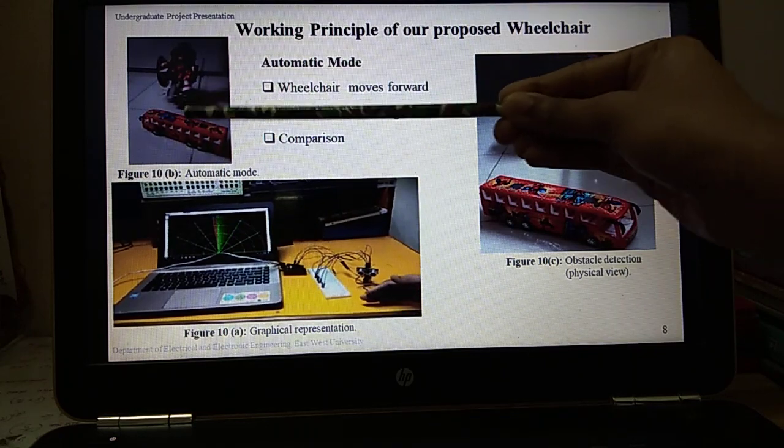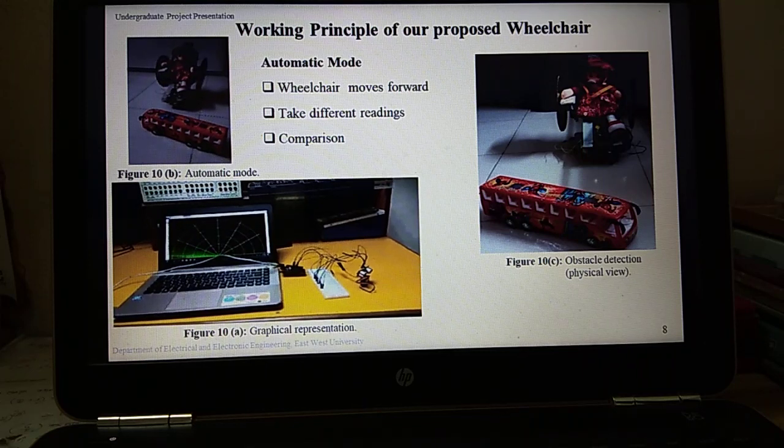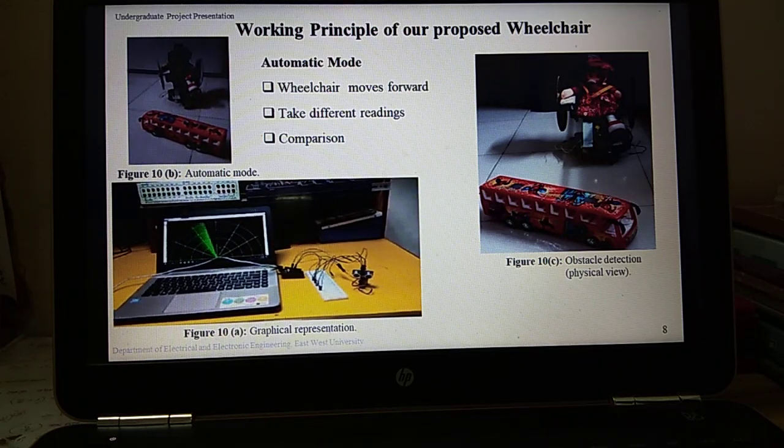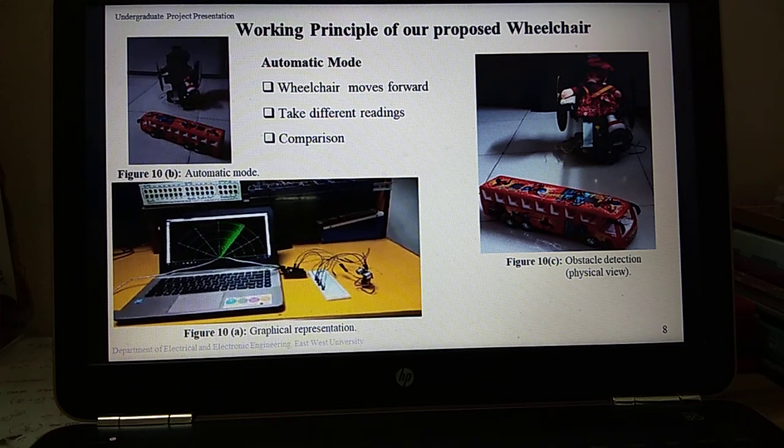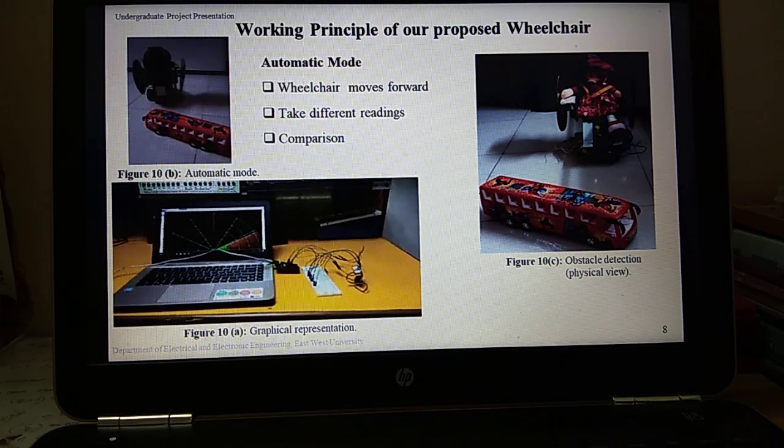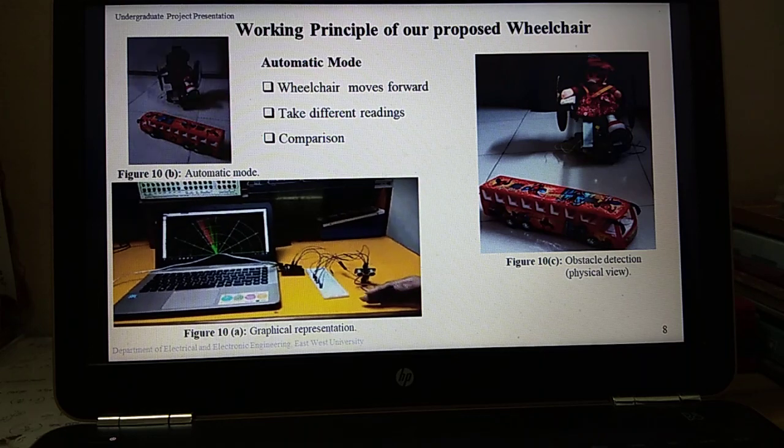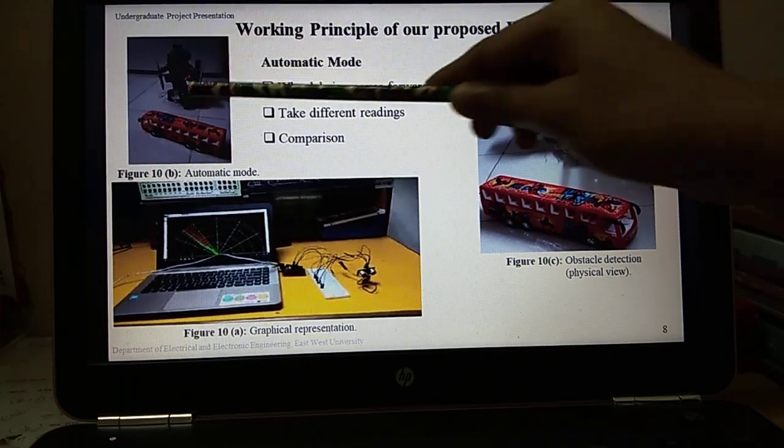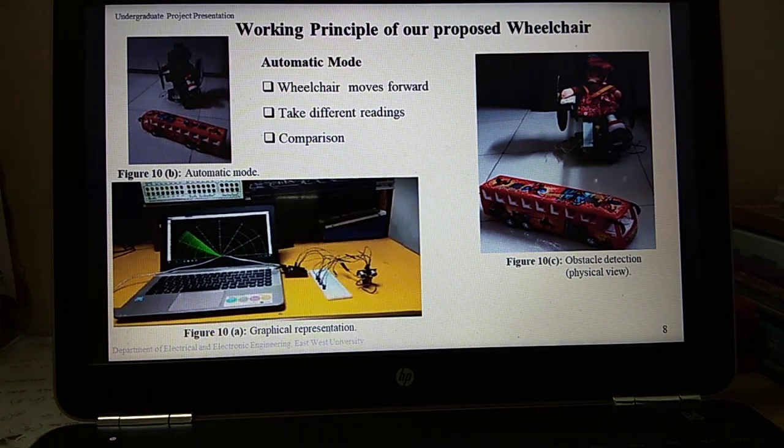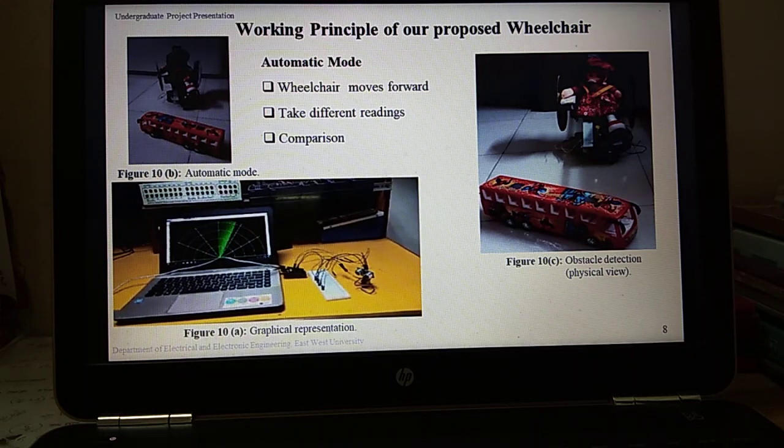When I switch on the prototype, both motors will run and it moves forward. During this time, the ultrasonic sensor continuously calculates the distance between the wheelchair and the obstacles in front of it. If the distance between the wheelchair and the obstacle is less than 30 centimeters, it will stop moving and rotate the sensor using servo motor to take readings at different angles. Here the reading from the sensor is less than 30 centimeters. For that reason, the wheelchair stopped moving forward and started taking different readings by tilting the servo.